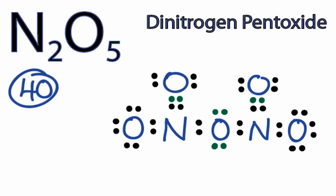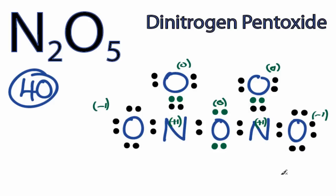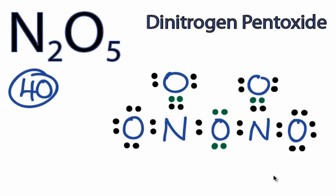Now, if I look at my formal charges, they're a lot closer to zero. The plus 1 is on the nitrogens, which makes sense because nitrogen is a little bit less electronegative than oxygen, and the oxygens have the negative ones. We've fulfilled the octets on all of the atoms, our formal charges are pretty close to zero, and the positive charges are on the least electronegative atoms. So this is the Lewis structure for N2O5. This is Dr. B, and thanks for watching.